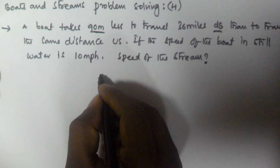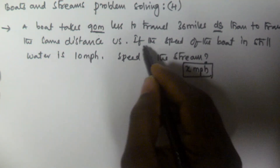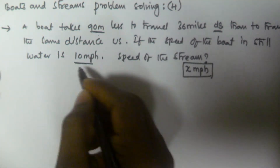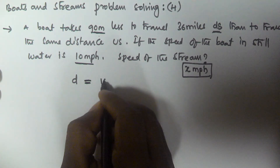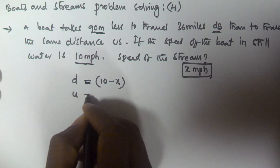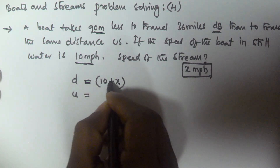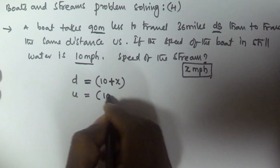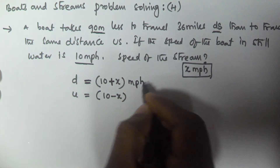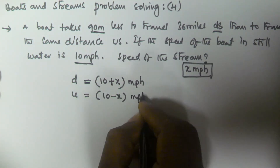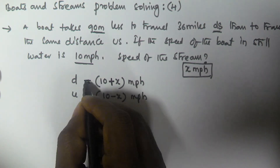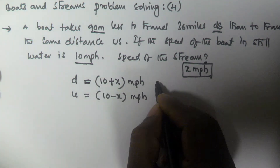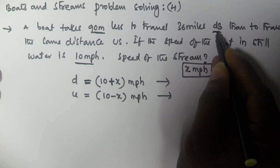Let us assume the speed of the stream is x miles per hour, and the speed of the boat in still water is 10 miles per hour. The downstream speed is given by 10 plus x, and the upstream speed is given by 10 minus x miles per hour. The downstream speed is 10 plus x because the speed of the current is also added to the speed of the boat in still water.